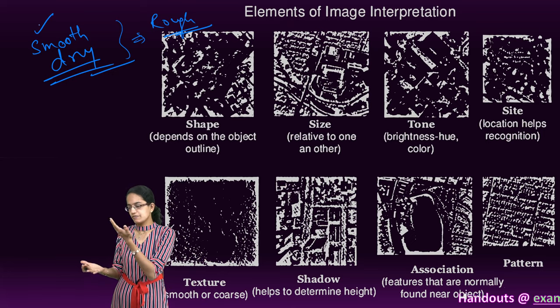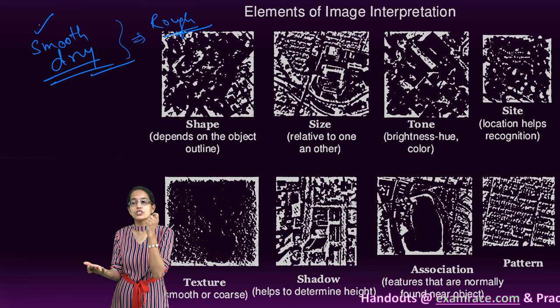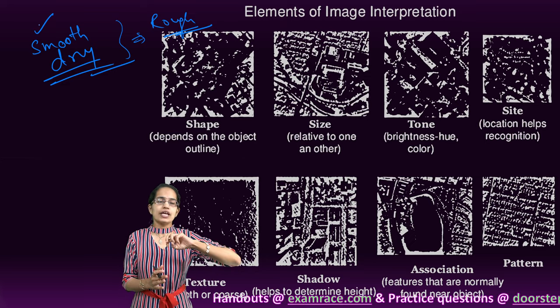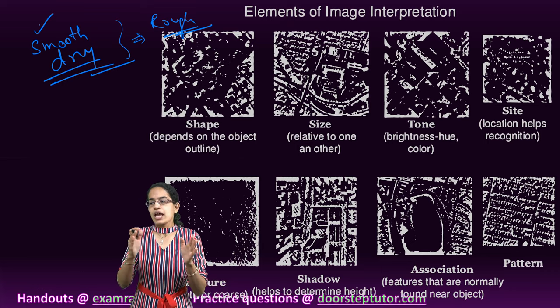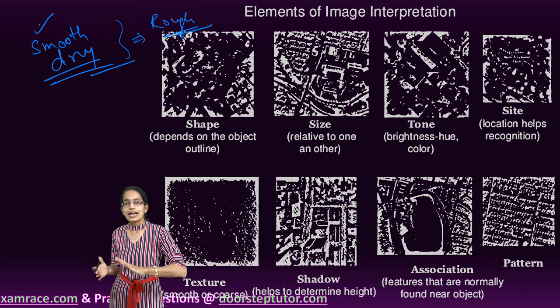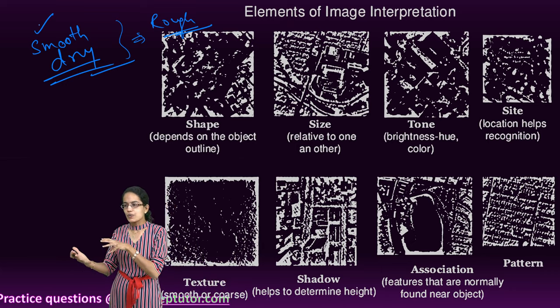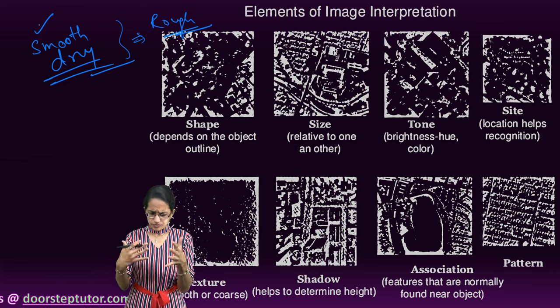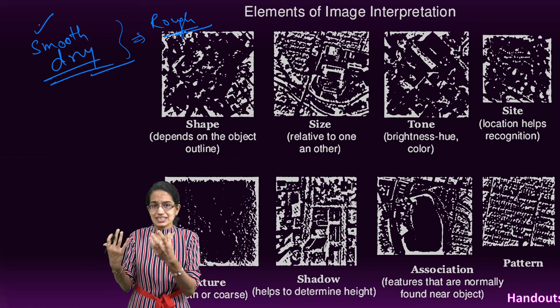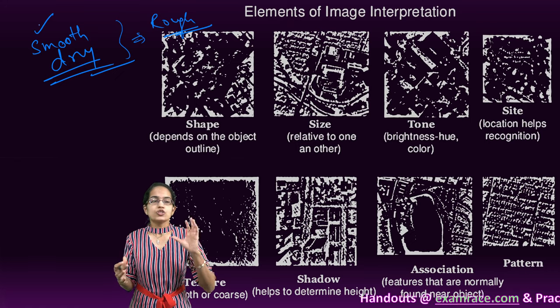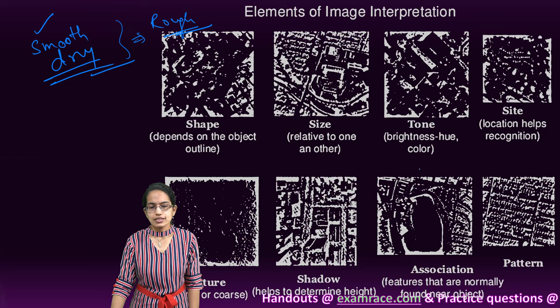A healthy vegetation would be seen strongly in an infrared region where you would have multiple layers of leaf structure that would be seen. This would appear in light tone or bright tone based on the vegetation pattern that is there. But if the vegetation pattern is a scrub, it would occur in the shades of gray. That is how we understand the tone.